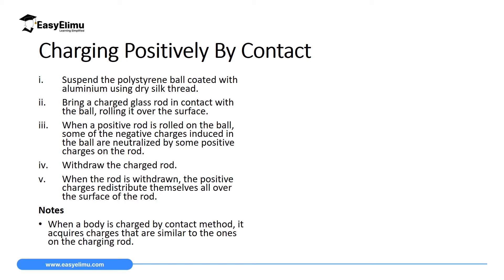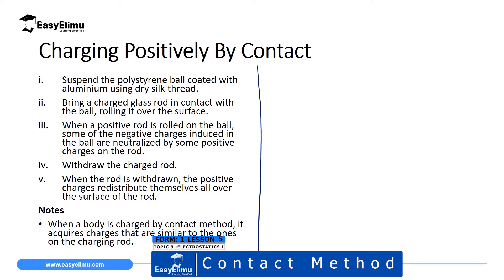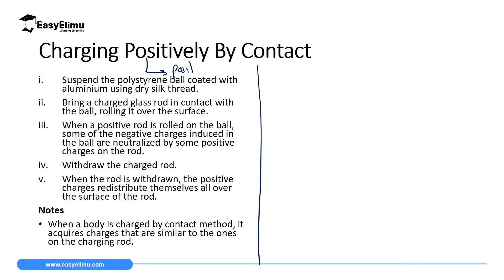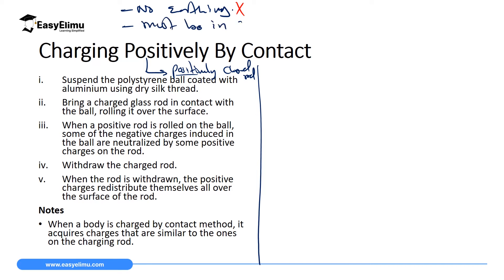So how do we charge a body positively by contact method? We are going to realize that we introduce a positively charged rod in contact with the body that we want to charge. This is different from induction, where if you want to charge a body positively you bring a negatively charged rod. But in contact method, you use a positively charged rod. It's important to note that in contact method there is no earthing, unlike in induction where we used earthing on the far end from the charging rod. Another important thing to note is that the two bodies must be in contact with each other. In induction, the two bodies were not allowed to be in contact.